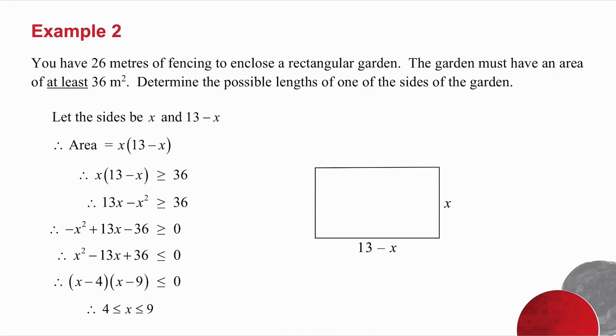I want an area, so I take length times breadth. It must be at least 36 meters squared, so I make the area greater than or equal to 36. Multiply your brackets and set up your quadratic equation. I don't like factorizing with a negative x squared, so I'm going to multiply everything by minus 1. And do not forget when you do so, that the inequality sign changes.